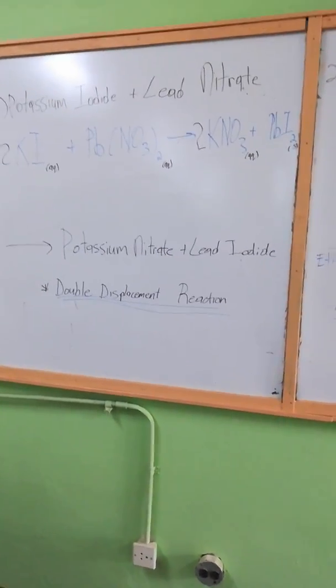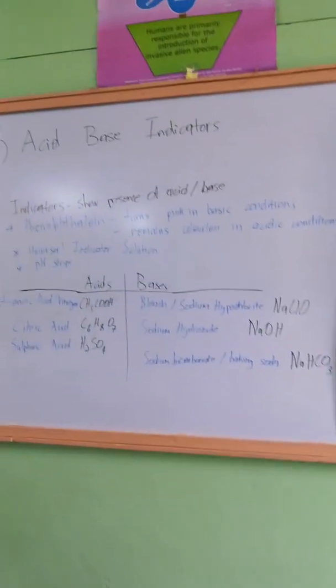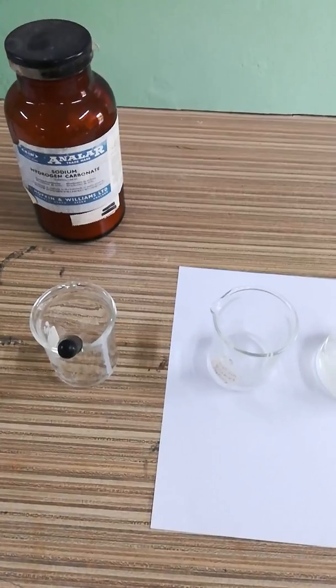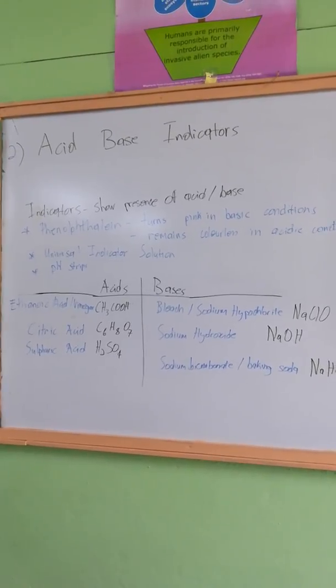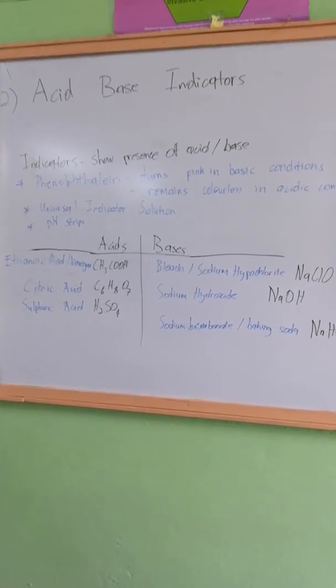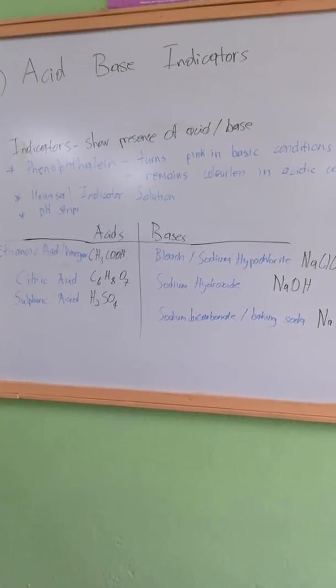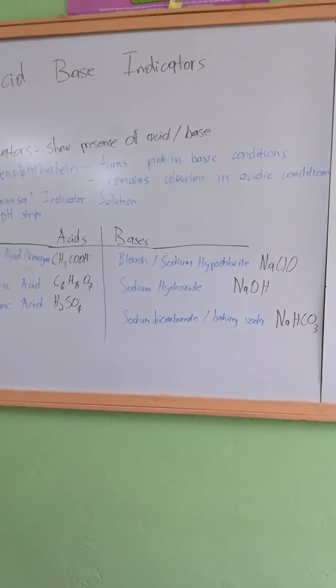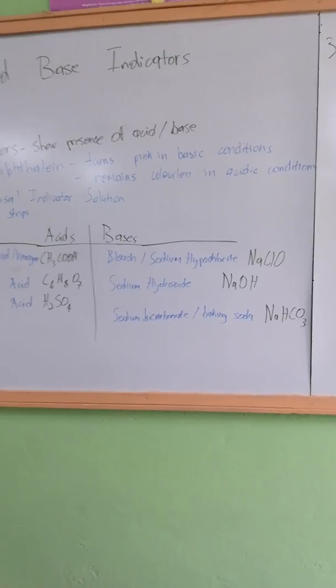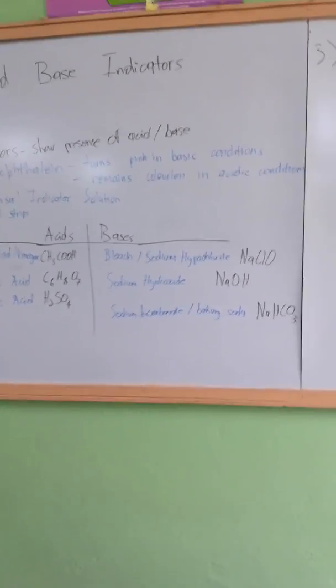For the second experiment we have some acid-base indicators, but for this video I'll only be using phenolphthalein, which turns pink in basic conditions. A few bases to note are bleach, which is sodium hypochlorite, sodium hydroxide, and baking soda, sodium bicarbonate. The formulas are right there.